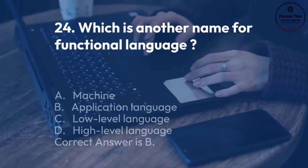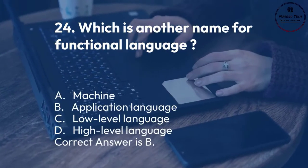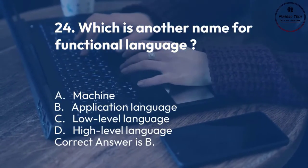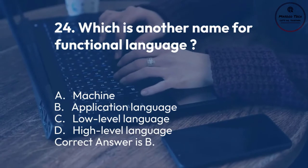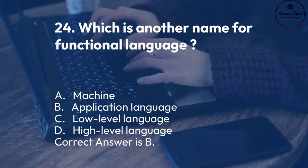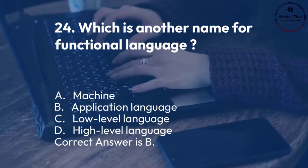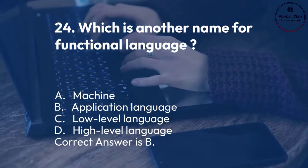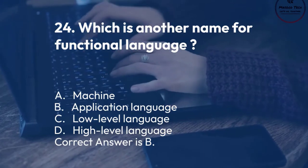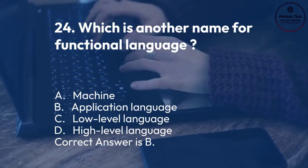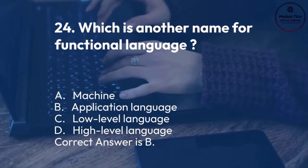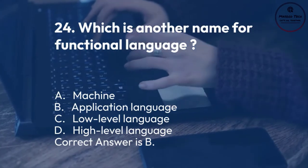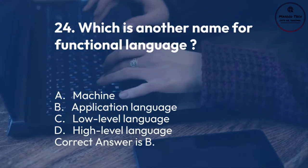Number 24. Which is another name for functional language? A. Machine. B. Application language. C. Low-level language. D. High-level language. Correct answer is B.